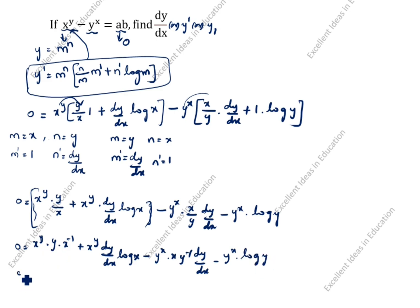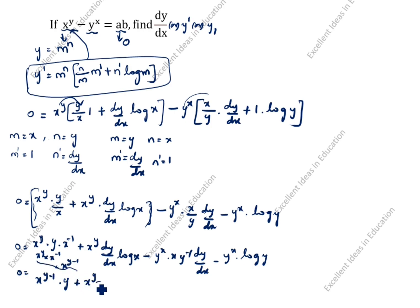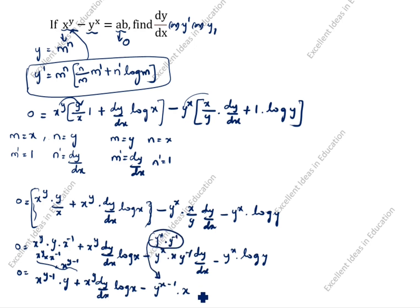We can rewrite this as: 0 is equal to x power y times x power (y minus 1) times y, plus x power y times dy by dx times log x, minus y power x times y power (x minus 1) times x times dy by dx, minus y power x times log y.